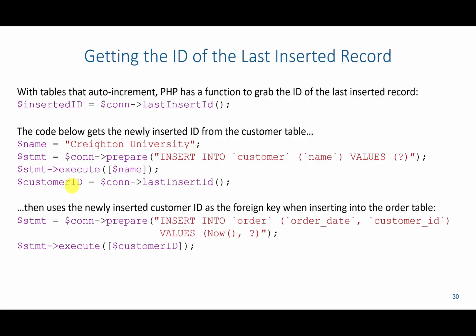Then, if we wanted to insert an order associated with this customer, we would prepare our statement by saying INSERT INTO order with the columns we need — order date and customer ID. The order date is NOW() and the customer ID is a question mark, supplied from the customer ID we generated above through the execute statement. So this customer ID gets passed into that question mark.